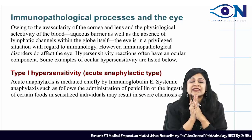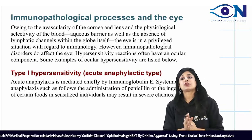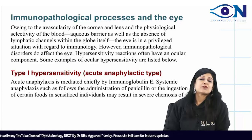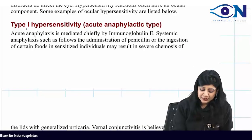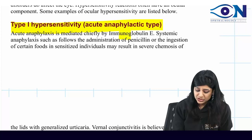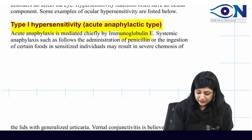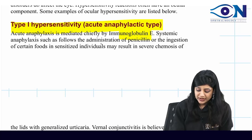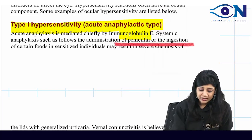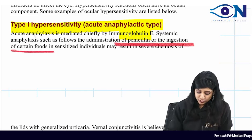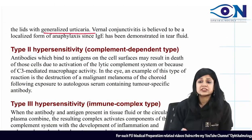Immunopathological processes and the eye. You already have this knowledge from microbiology about the different kinds of hypersensitivity reactions. Type 1 hypersensitivity is IgE mediated. We can have anaphylactic reactions due to the administration of penicillin or by ingestion of certain foods. We can also have urticaria.